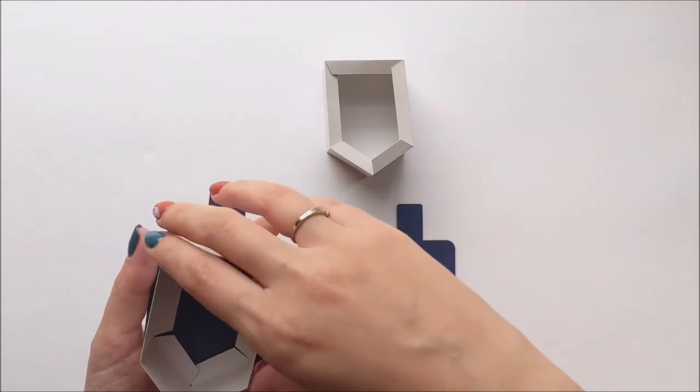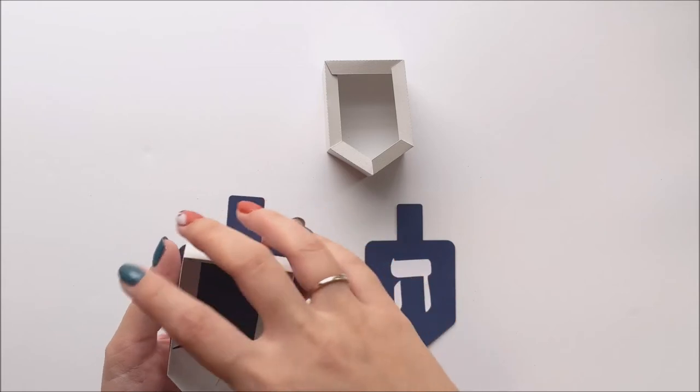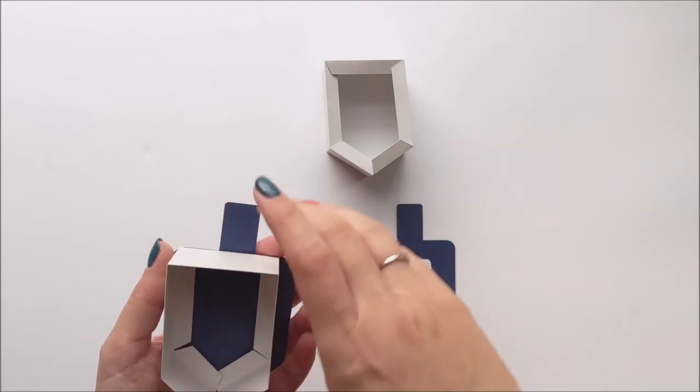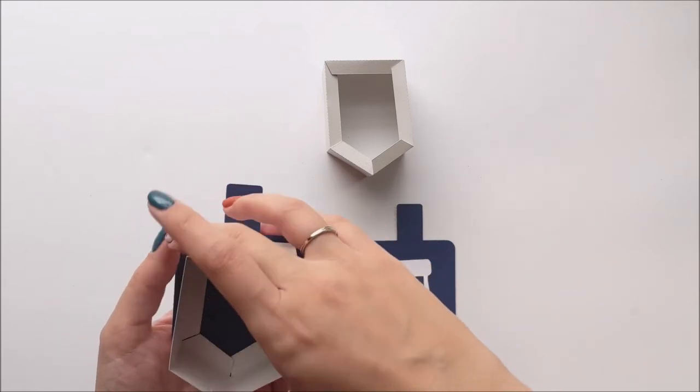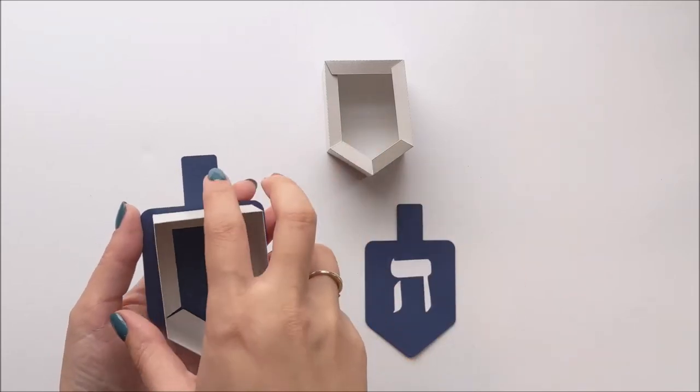And you want to make sure it kind of keeps that dreidel shape, that it's not at a wonky angle or anything. You want to keep it almost looking like an upside-down house. You just want to make sure and keep that shape so that the two can nest together.